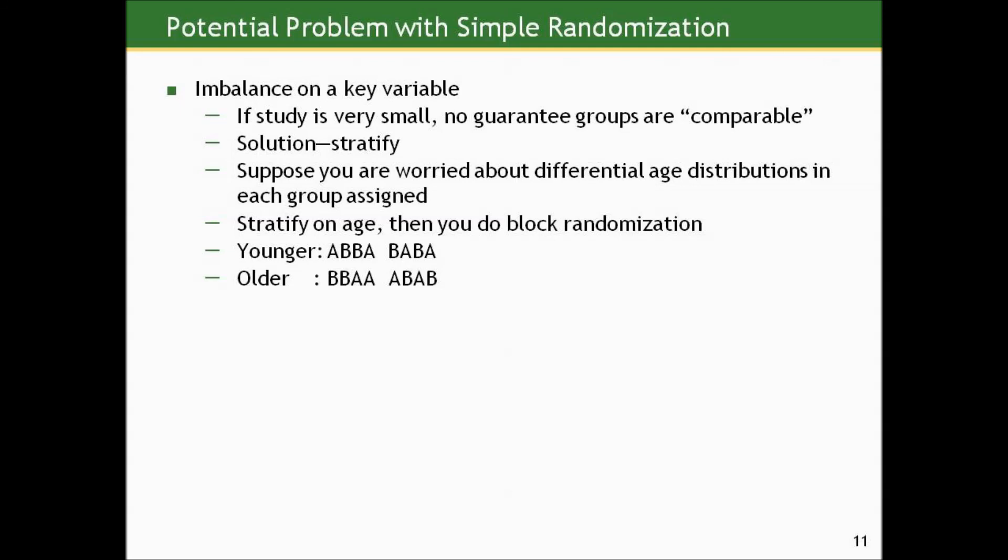Well, of course, this is all good and well if you can randomize ethically, operationally, or otherwise, but there's going to be many situations where we cannot randomize. So what do we do when we can't randomize? Well, you'll just have to wait for section C.